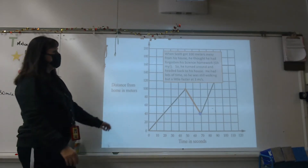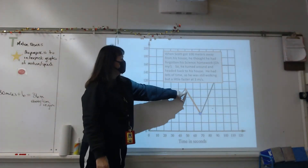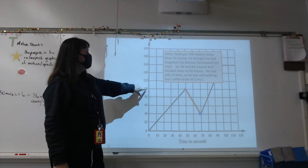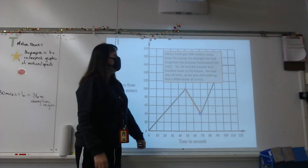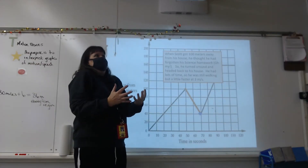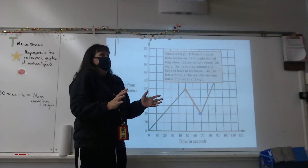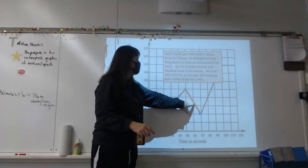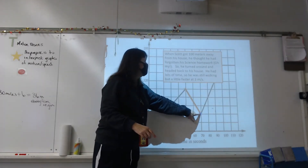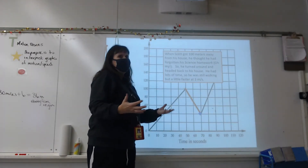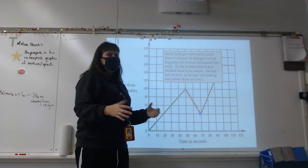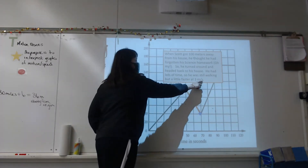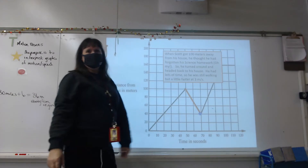When Scott gets 100 meters away from his house — you can see that right here on the graph — he thinks he's forgotten his science homework. So he turns around and heads back toward his house, still walking but going a little faster at three meters per second.